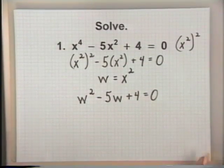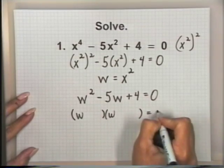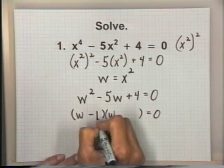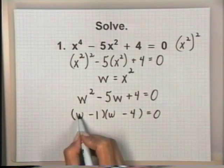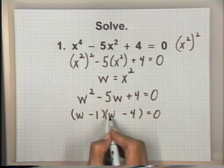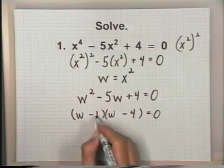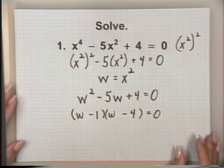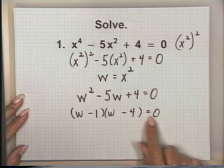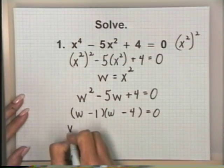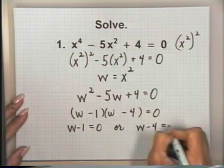Since it is quadratic, we will try to factor it. We'll use w times w for w squared. For positive four, let's use minus one and minus four. Checking: w times w is w squared; minus four w is the outside product; minus one w is the inside product. Minus four w plus minus one w gives minus five w. And negative one times negative four gives positive four. Using the zero product principle, either w minus one equals zero or w minus four equals zero.